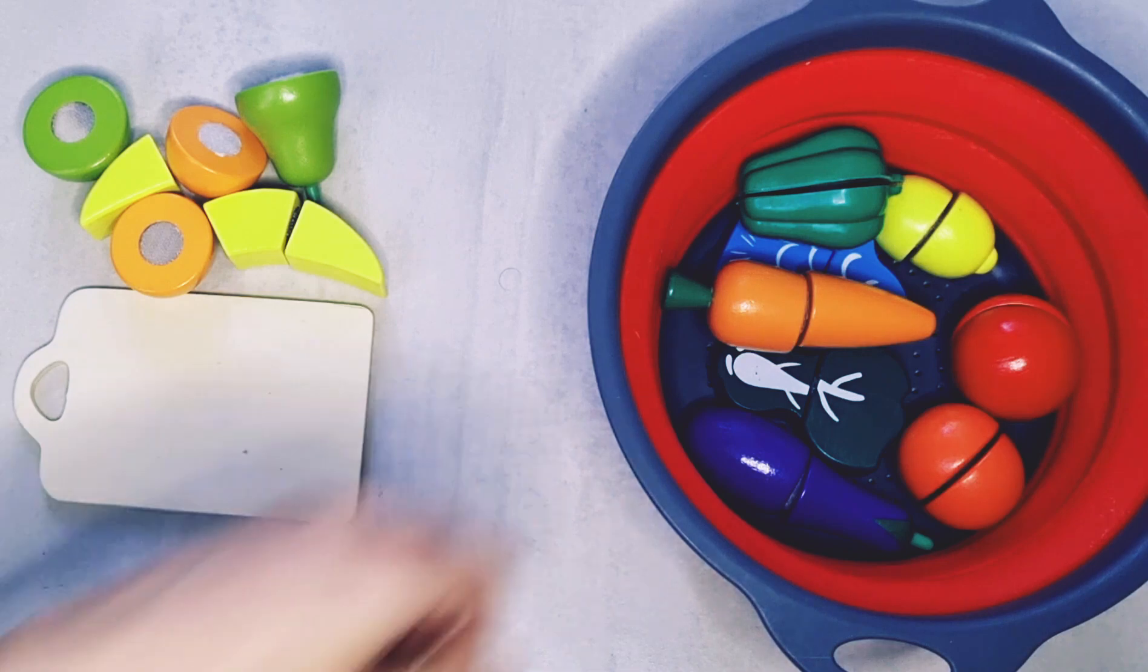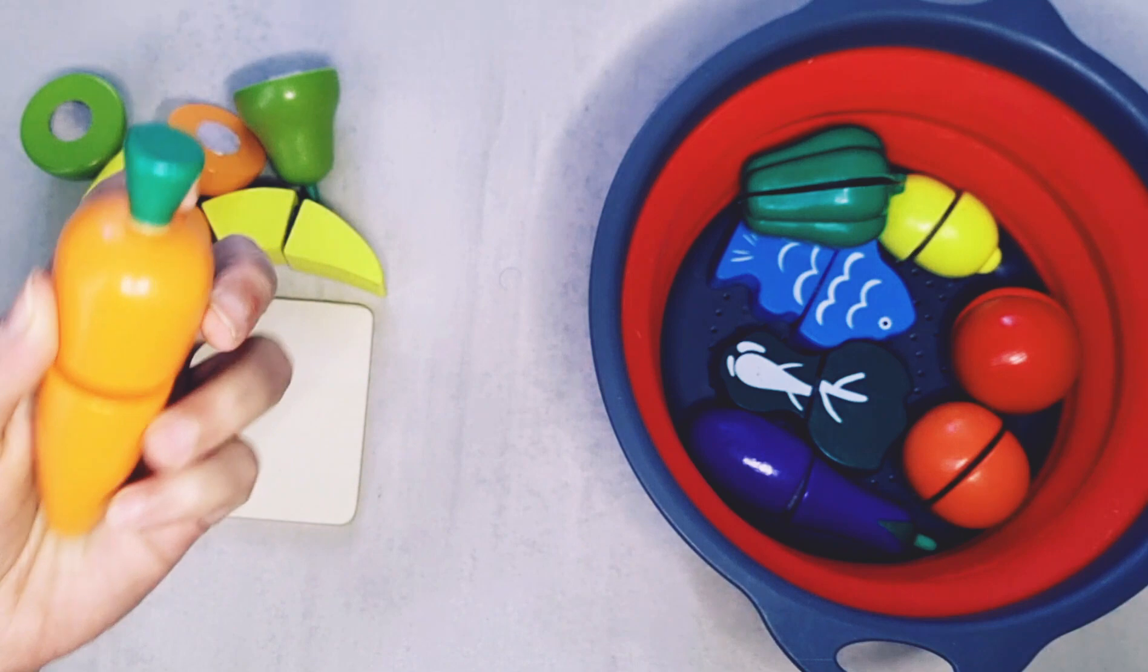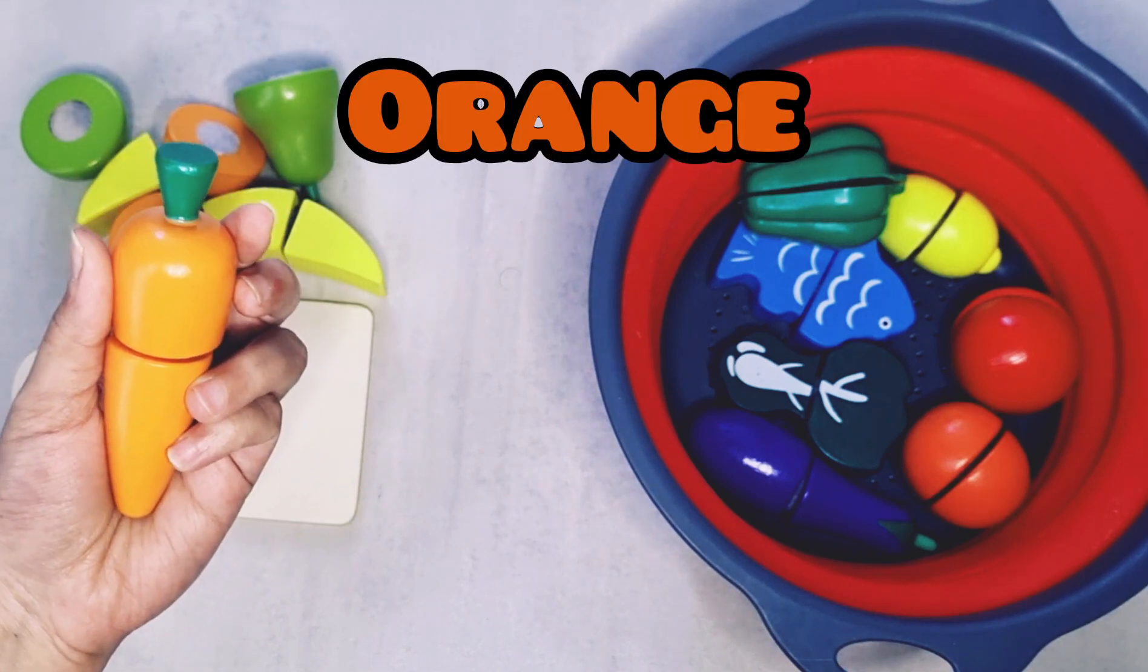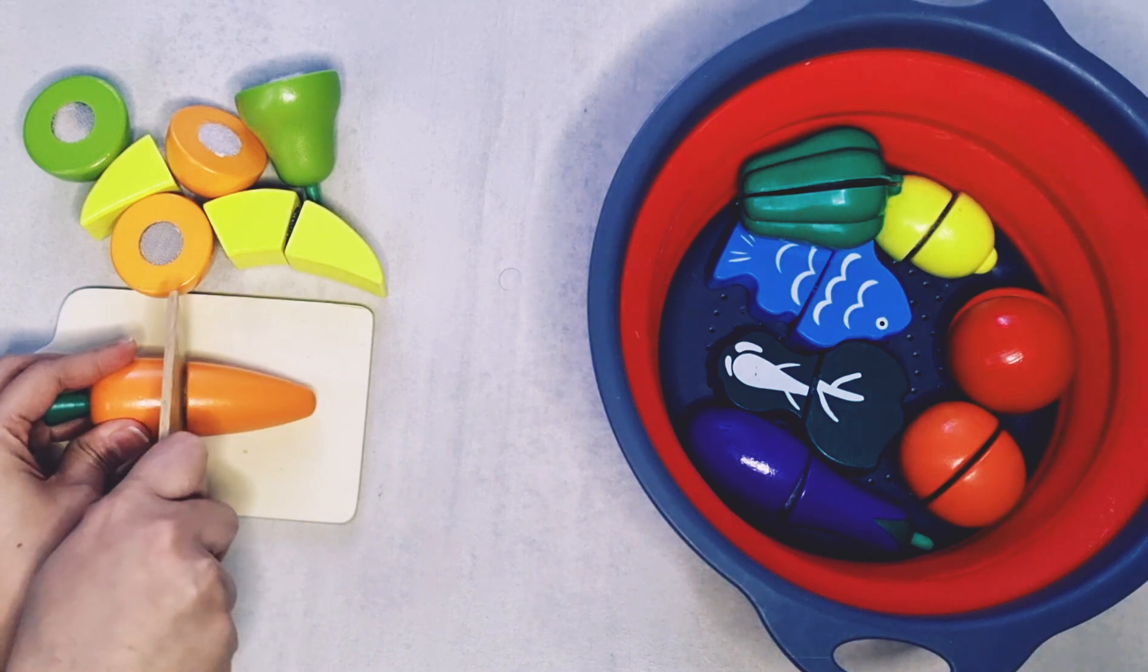Now comes the carrot. Carrot is orange in color and it starts with the letter C. It's very healthy.